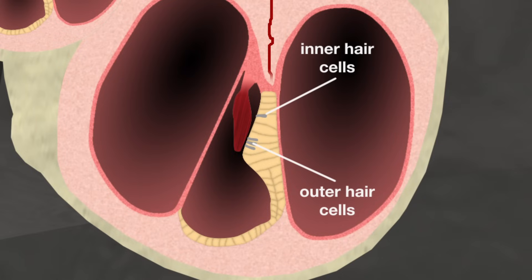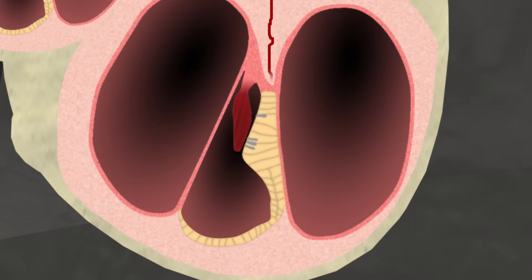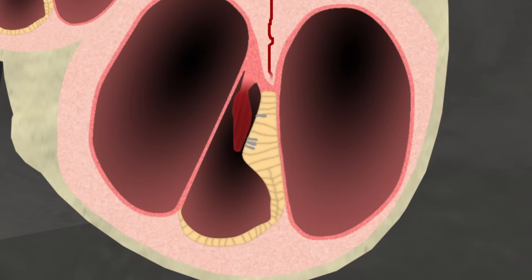Along the basilar membrane are two types of sensory cells, or hair cells, called the outer and inner hair cells. These are arranged in rows according to the frequency or pitch of sound they detect, covered by the tectorial membrane. Each hair cell has tiny hair-like projections called stereocilia. When sound energy is transferred to the cochlea, the basilar membrane vibrates up and down, causing the outer hair cell stereocilia to shear on the tectorial membrane above.